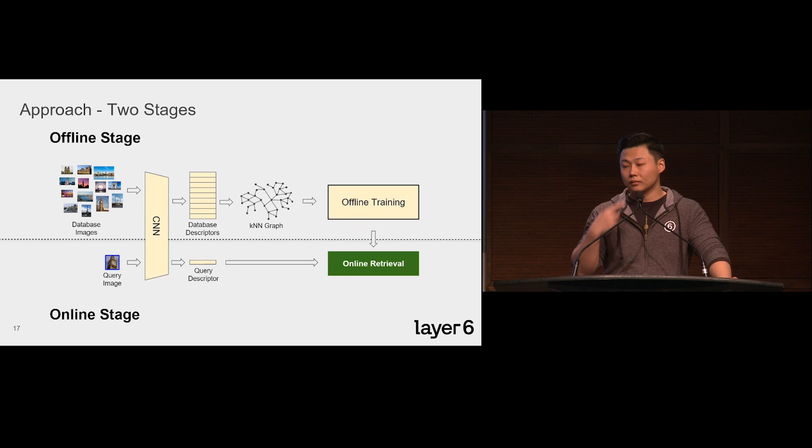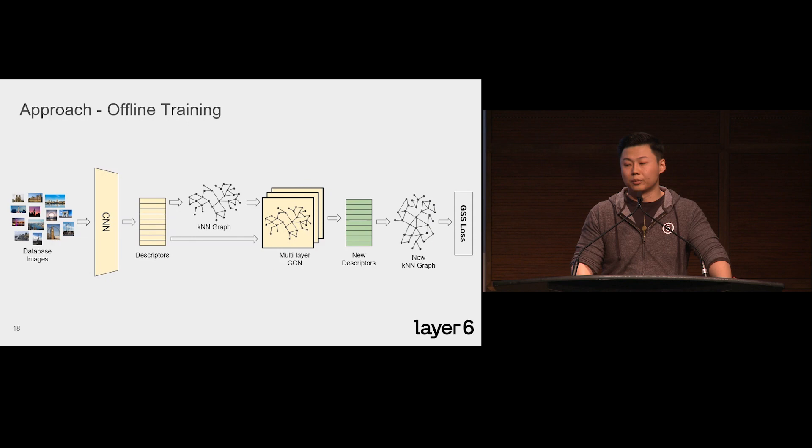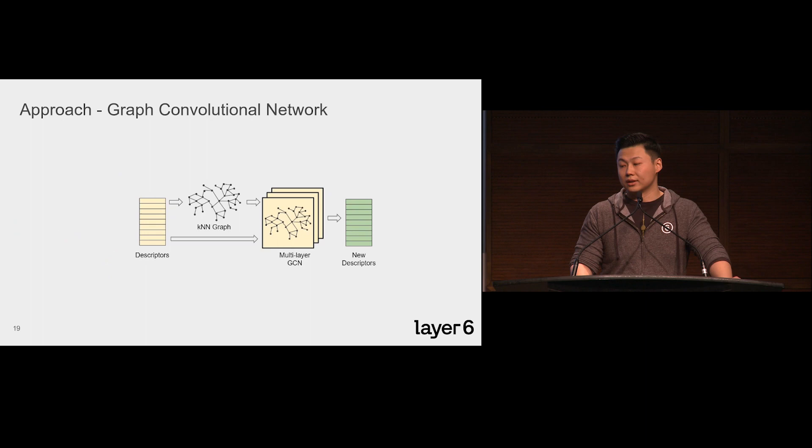Next, I'll quickly go through our model architecture for the offline training. Following previous work, we first pass all database images through a pre-trained frozen CNN and generate descriptors, and then a KNN graph is built from the descriptors, and we feed both the descriptors and the KNN graph into a multilayer graph convolutional network, and it generates new descriptors. A new KNN graph is built from the new descriptors, and we apply the novel guided similarity separation loss to train the model. Back propagation only happens between the GCN model and the GSS loss, and also only GCN layers contain trainable weights.